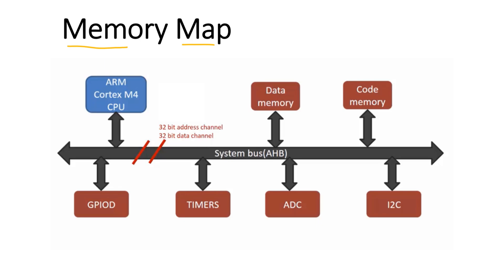The Cortex-M4 processor has a 32-bit data bus as well as a 32-bit address bus, because the ARM Cortex-M4 processor is a 32-bit processor, which means it has a 32-bit address bus and a 32-bit data bus.